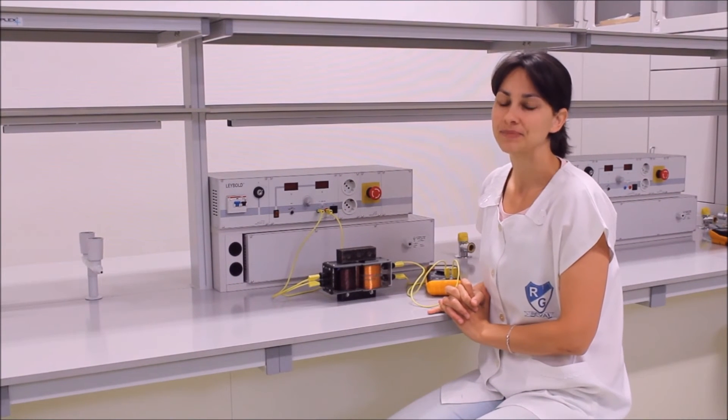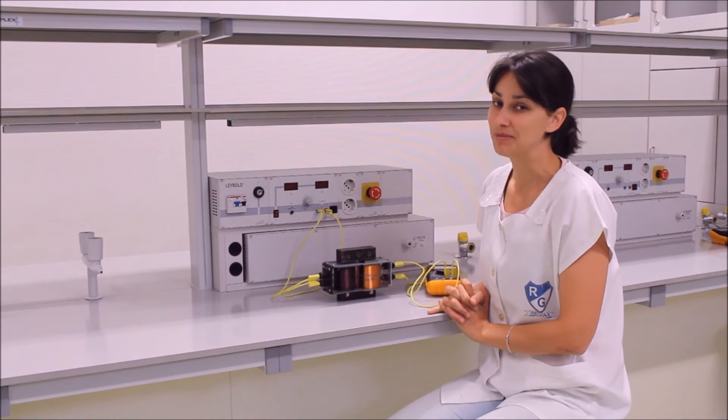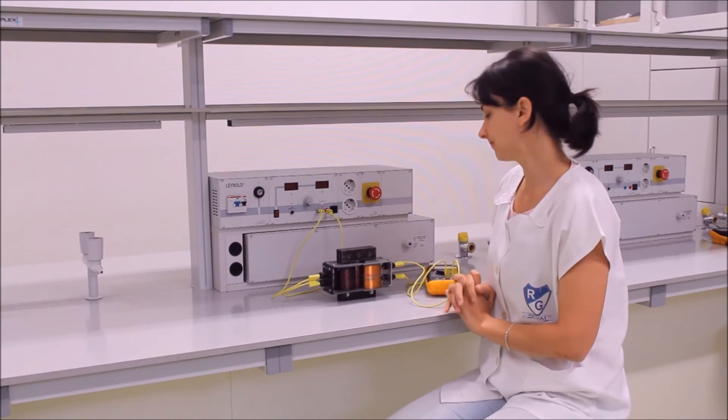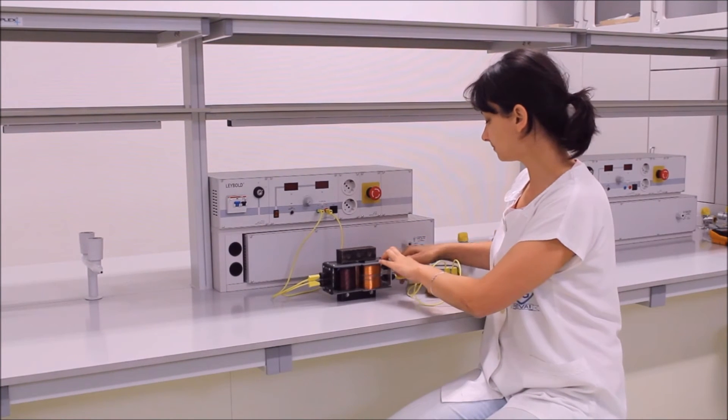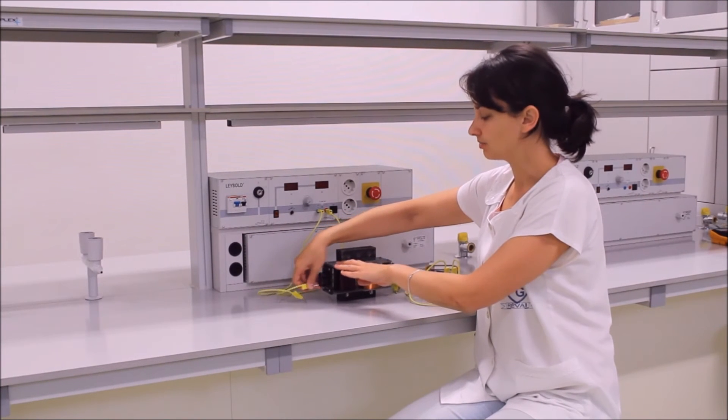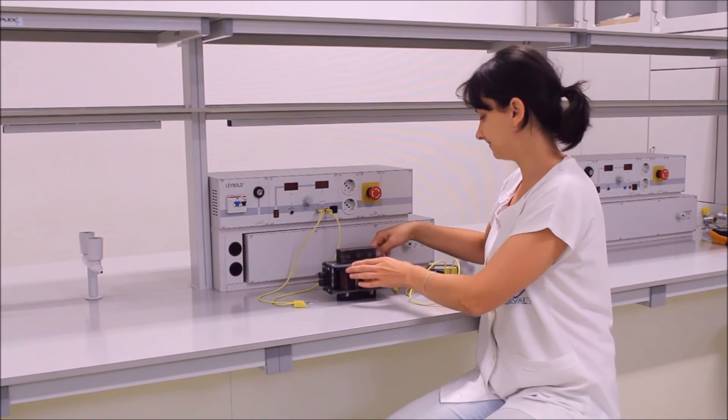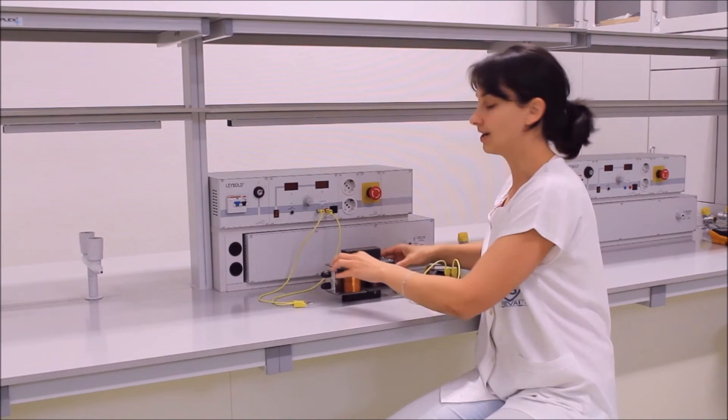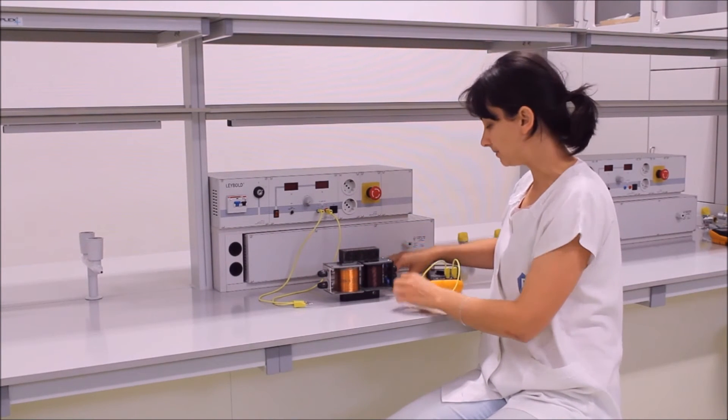Nézzük a letranszformálást. Ehhez fel kell cserélnünk a primer és a szekunder tekercsünket, tehát a 600 menetes tekercset kapcsoljuk a tápegységünkhöz, a 300 meneteset pedig a multiméterhez.